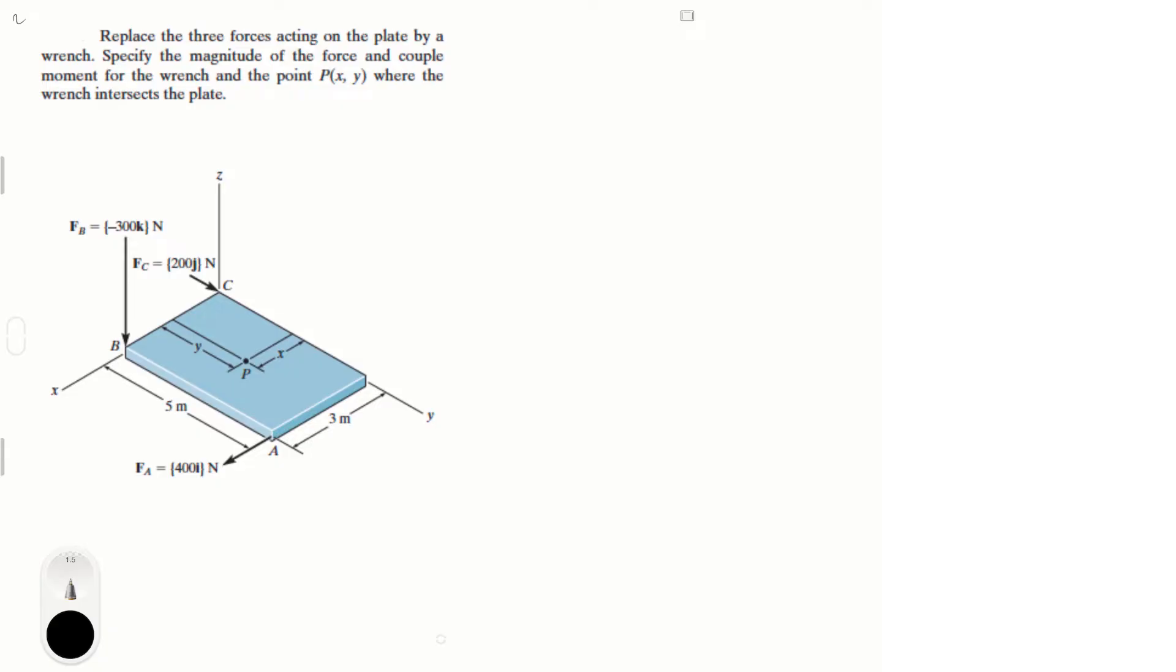Let's do this problem that says replace the three forces acting on the plate by a wrench, specify the magnitude of the force and couple moment for the wrench and the point P(x,y) where the wrench intersects the plate. This problem is a little bit time consuming, so let me try my best to explain it and bear with me.